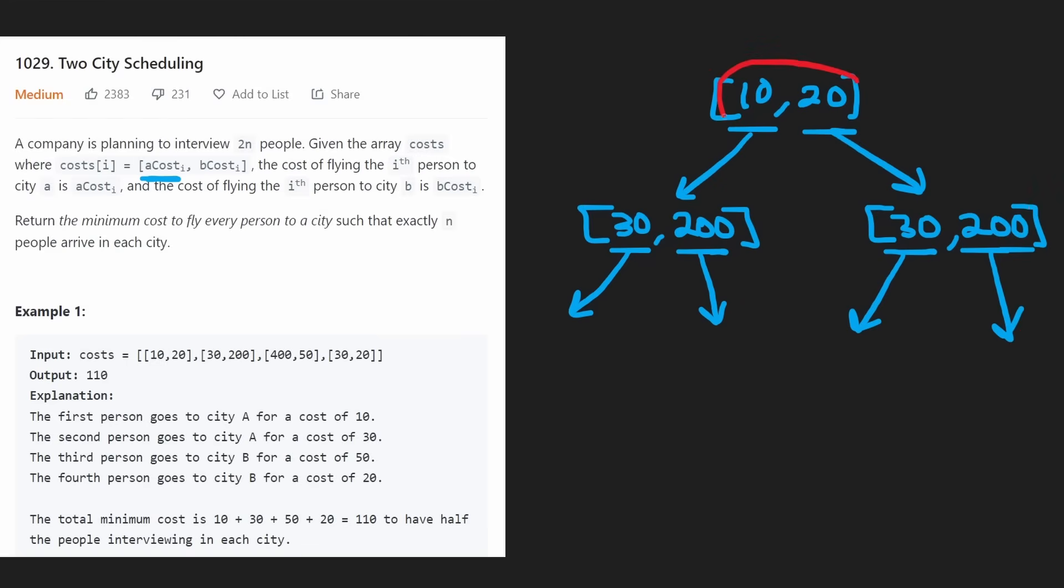This is kind of what that decision tree would look like. The first choice is between 10 and 20. Each pair represents a person. This person can either go to city A for a cost of 10 or they can go to city B for a cost of 20. Next up, we'd have the same choice on both sides of the tree, but they're technically different results.